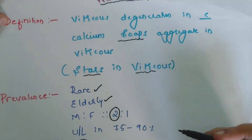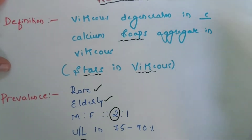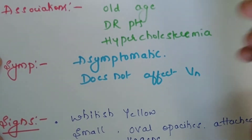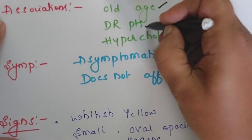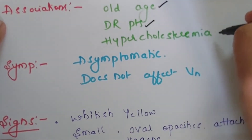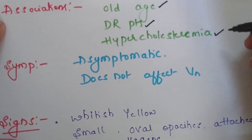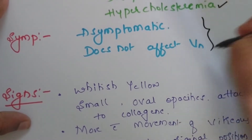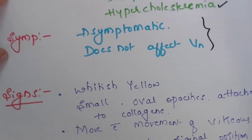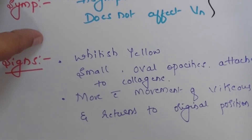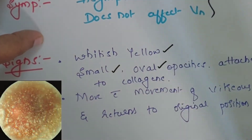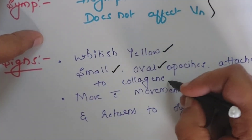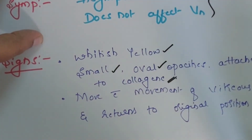Regarding prevalence, it is a very rare disease usually seen in the elderly age group, with a slight male preponderance, and it is most commonly unilateral in almost 75 to 90 percent of cases. The most common association is age. It can also be seen in diabetic retinopathy and hypercholesterolemia patients. It is usually asymptomatic and doesn't affect vision. On fundus examination, these appear as whitish-yellow, small oval opacities attached to the collagen fibrils in the vitreous.